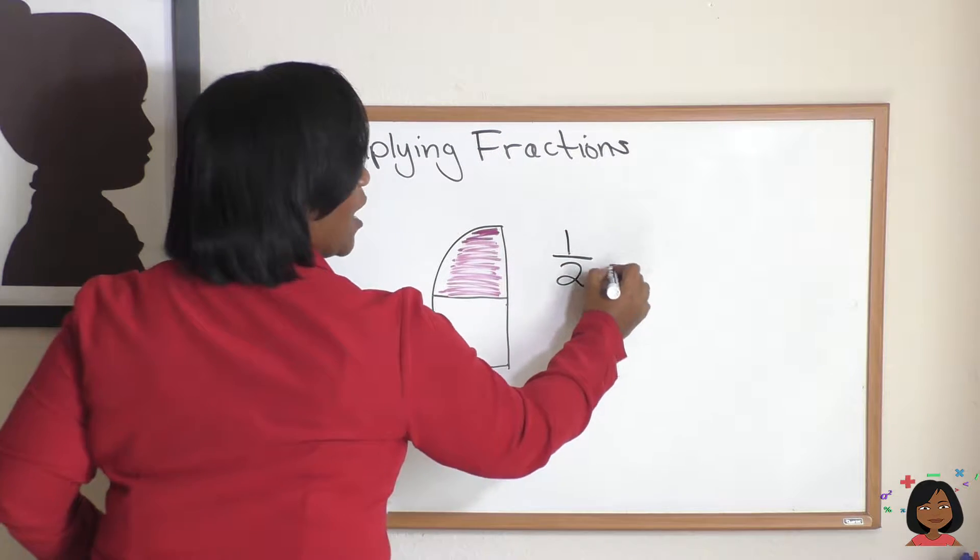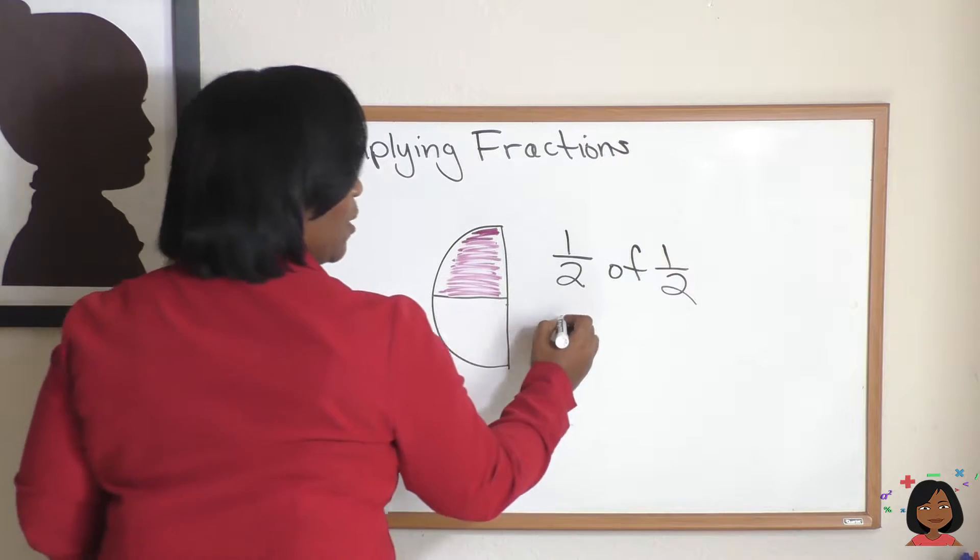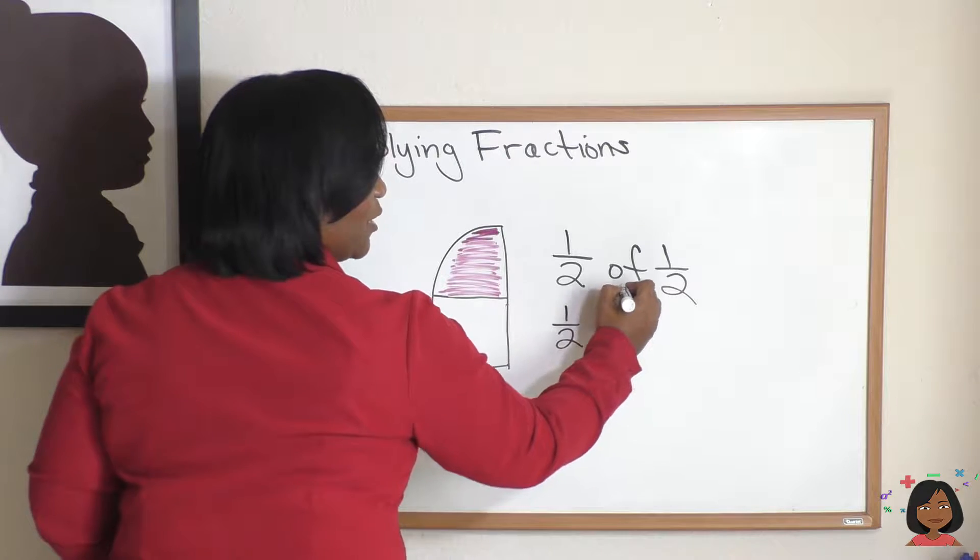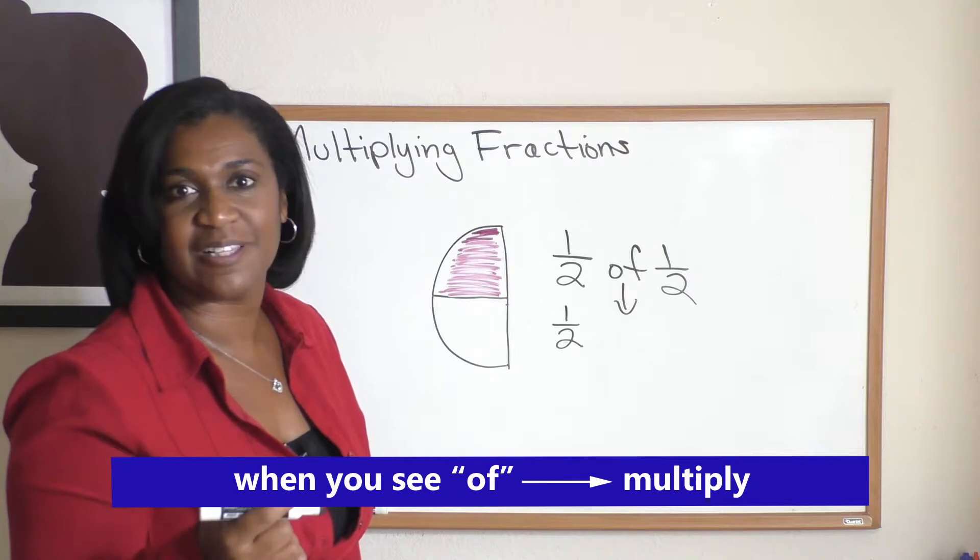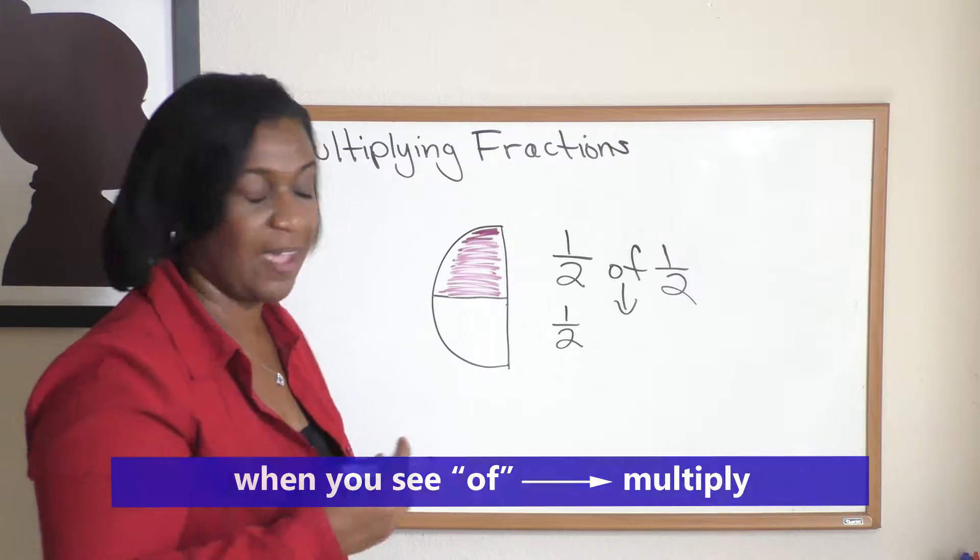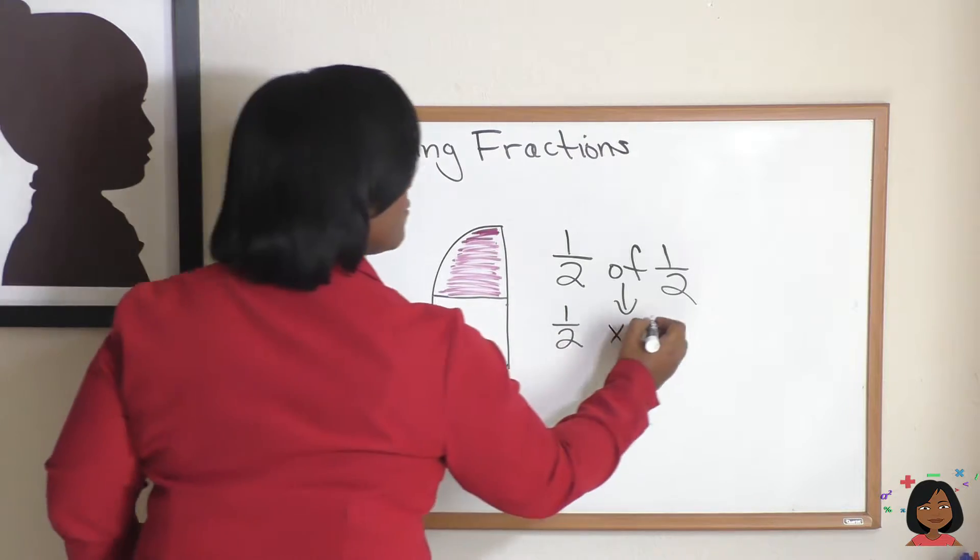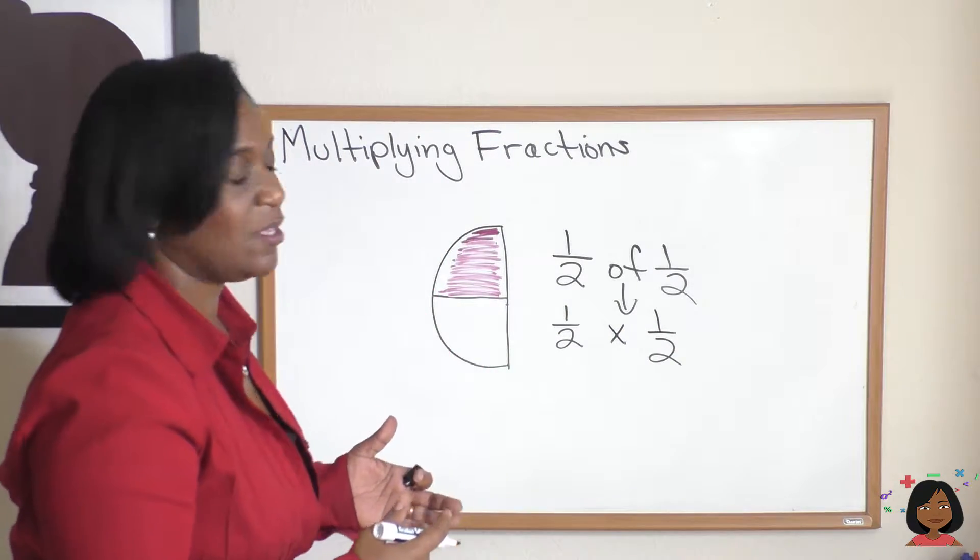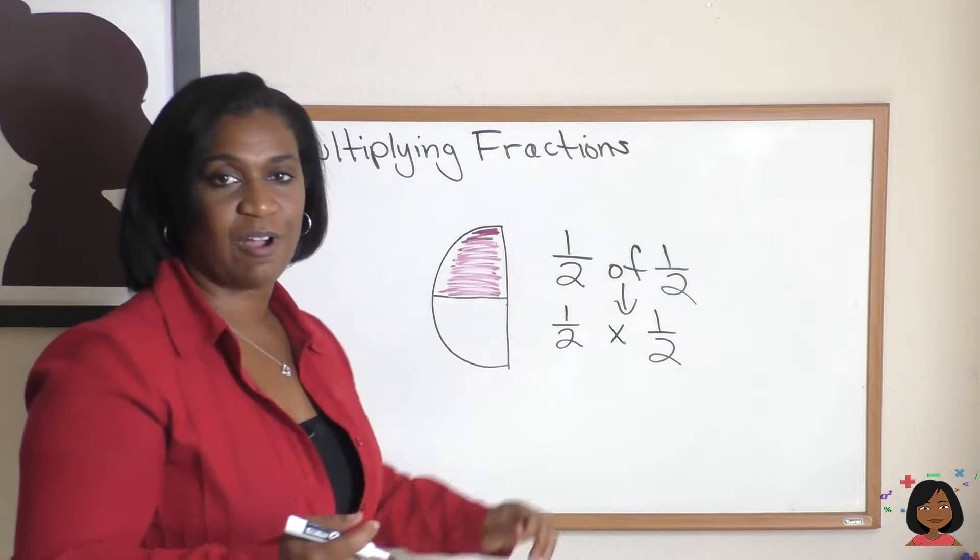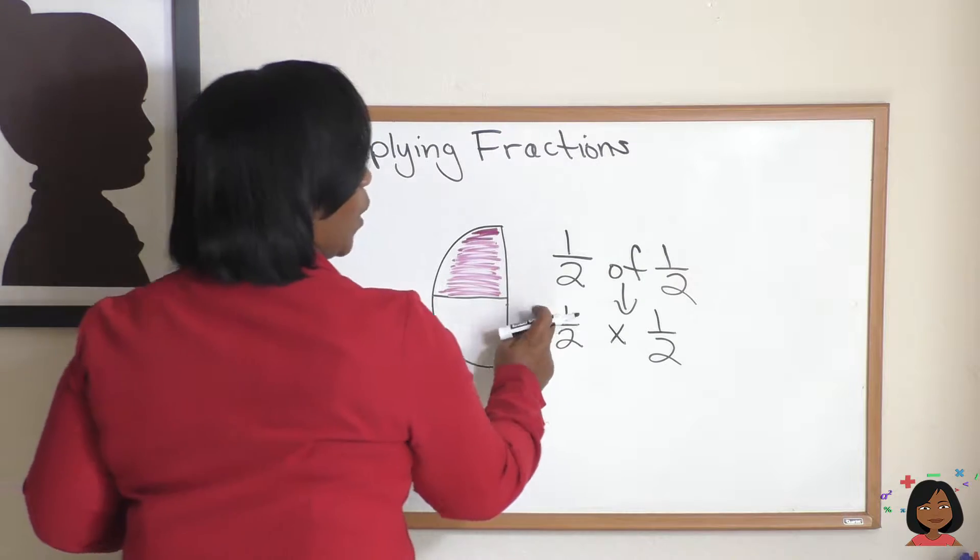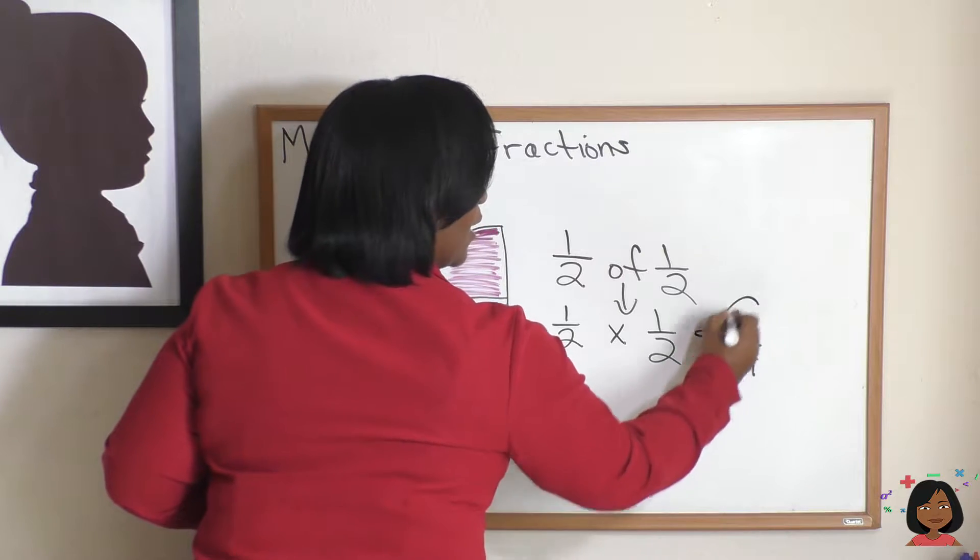But when it comes to math, if we say we wanted half of a half a pizza pie, we can do multiplication. Really, when you see the word 'of' in math, it generally means multiply. One half of one half. And when we multiply, we multiply the top across and we multiply the bottoms across. So let's do that. One times one equals one, two times two equals four. And look at that, we still have a quarter of a pizza pie.